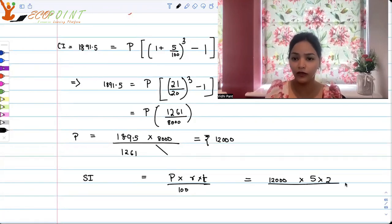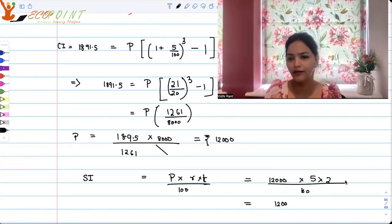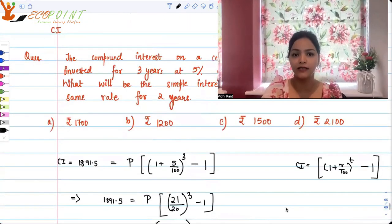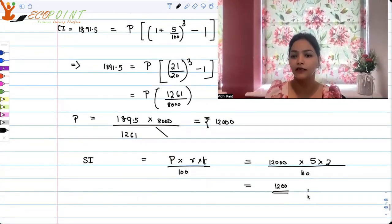Two years divided upon 100. So that will give us 12,000 because 5 into 2 is just 10. So just cancel out the zeros, you'll get 1200. 1200 is the correct answer. B is the correct option. We do have an option for it.